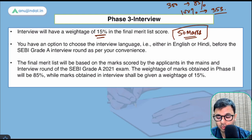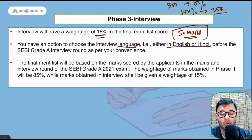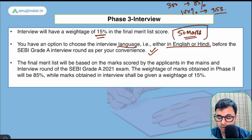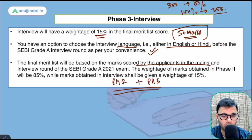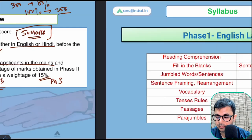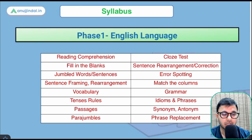For the interview, you have an option to choose either English or Hindi as your language — this is specifically mentioned in the notification. So don't worry if your English is not strong. The final merit list will be based on marks scored in Phase 2 (mains) and Phase 3 (interview) — 85 percent weightage to Phase 2 and 15 percent to Phase 3.